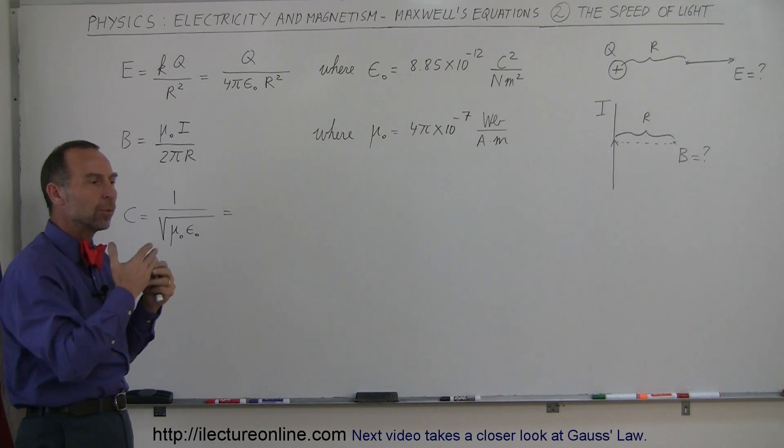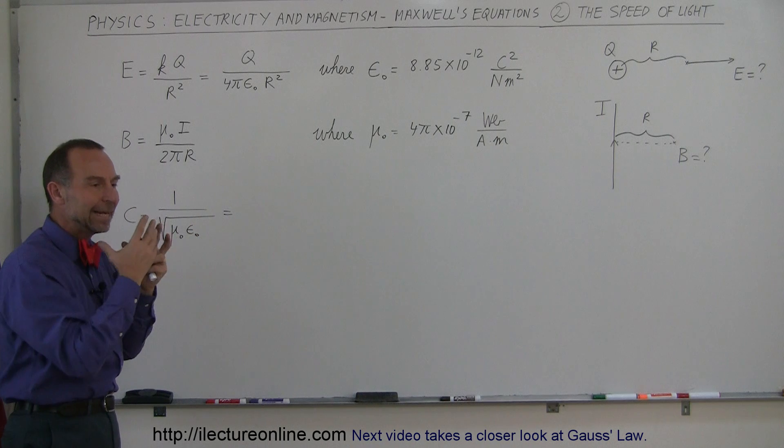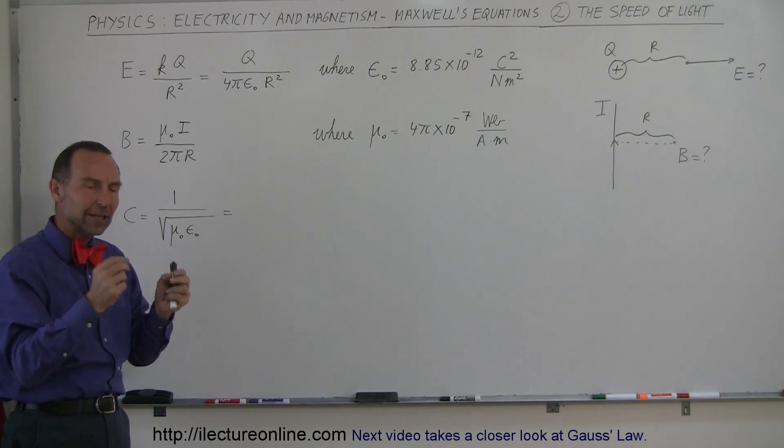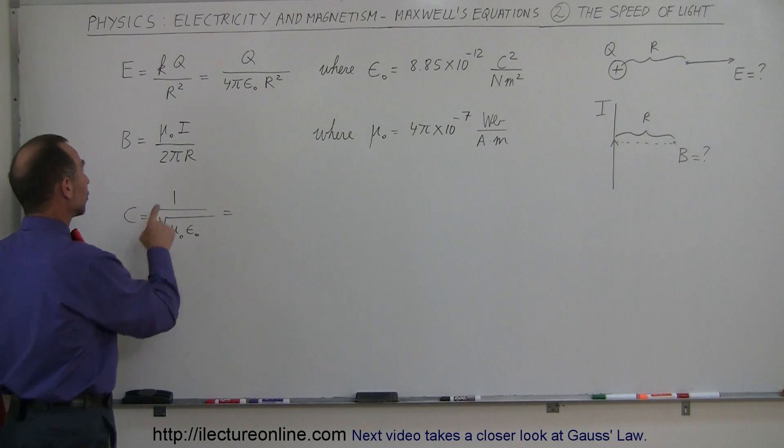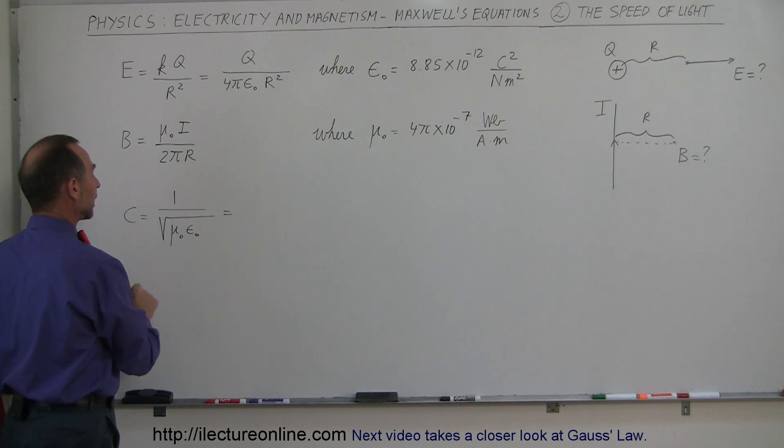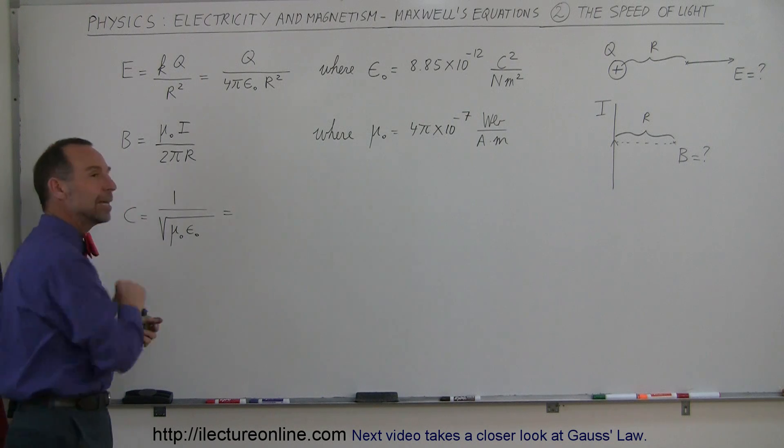And he figured out what's equal to the speed of light. And he found out that if he took those two constants, multiplied them together, took the square root, and took the inverse of it, that was exactly equal to the speed of light.